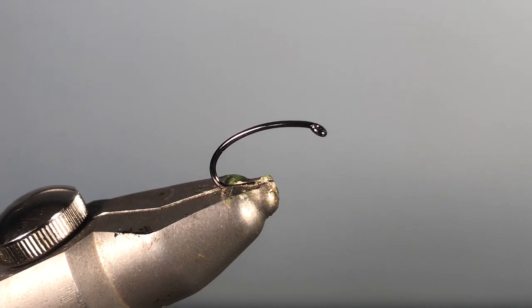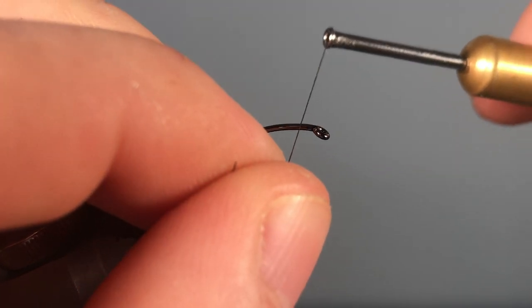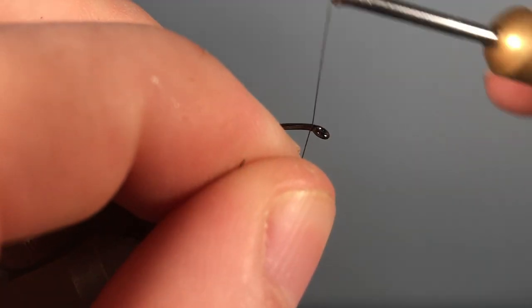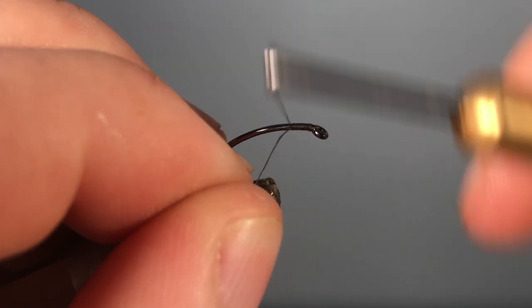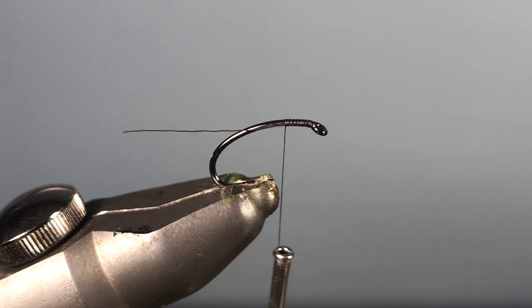Hello guys and welcome back to a new video. Today we are going to be tying a new pattern, and what we're going to be tying is a buzzer. So what we're going to be doing is getting the thread onto the hook like we always do first, tie it in, and then snip off that excess tag like so.